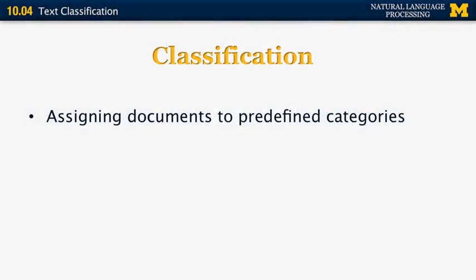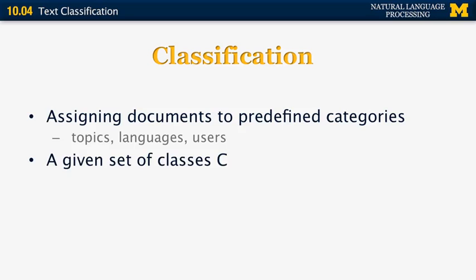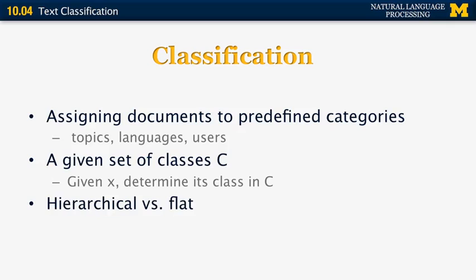Welcome to Natural Language Processing. The next topic is text classification. What is text classification? We want to assign documents to predefined categories — for example, based on topics such as science and technology versus music, based on languages, or based on different users. We're given a set of classes C and a document X, and we have to determine which class in C it belongs to.